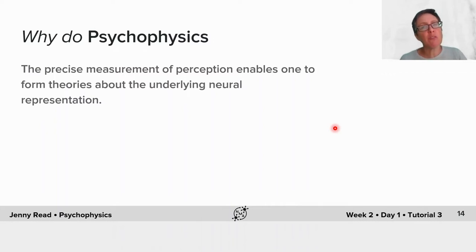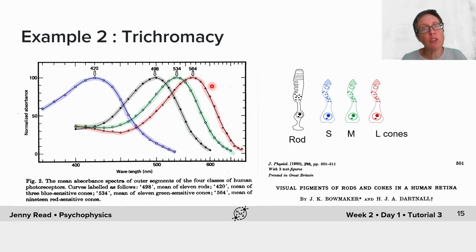The precise measurement of perception is what enables you to form theories about the underlying neural representation, which you can then test with other neuroscientific approaches, such as physiological recordings. I'm sure you're all well familiar with the idea that trichromacy, the neural substrate of trichromacy, are the three cone types, the photoreceptor classes that we have in our retina.